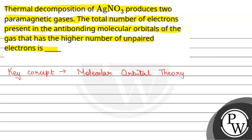कोशिन में क्या बोल रहे हैं? AgNO3 की thermal decomposition. हमें दो gases देता है — Ag plus NO2 plus half O2. O2 और NO2 दोनों gases हैं, और paramagnetic gases हैं।